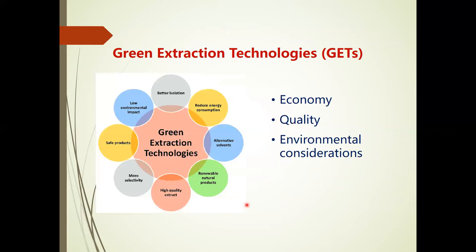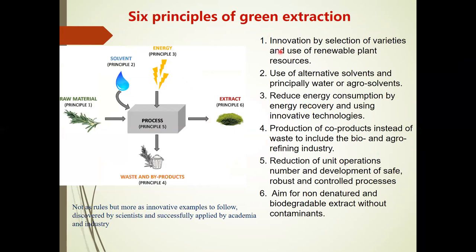In Taiwan, the industry focuses on green extraction techniques, particularly for government regulations and environmental considerations. There are six principles for green extraction: one, innovation by selection of varieties and use of renewable plant resources; two, use of alternative solvents and the principle of water or alcohol; three, reduce energy consumption by energy recovery or using innovative techniques; four, production of co-products instead of waste to include bio or alcohol refining industry; five, reduction of the number of unit operations and development of a safe, robust, and controlled process — aiming for natural and biodegradable extracts without contaminants.